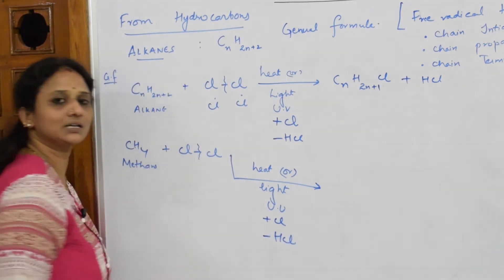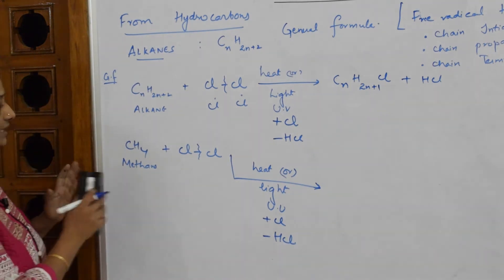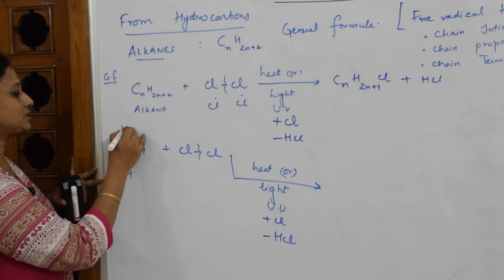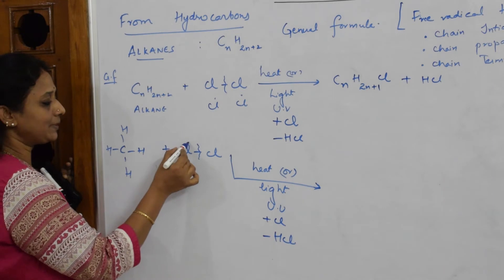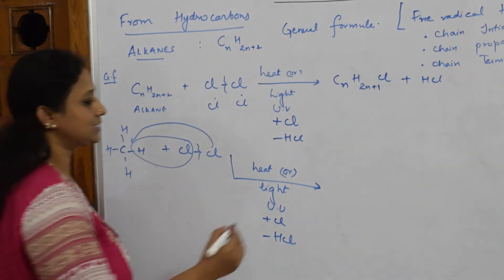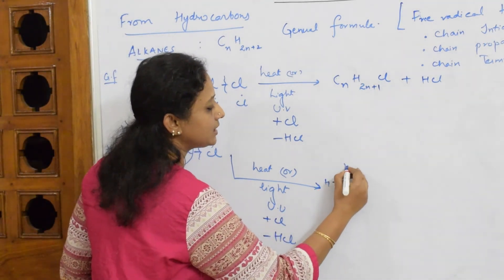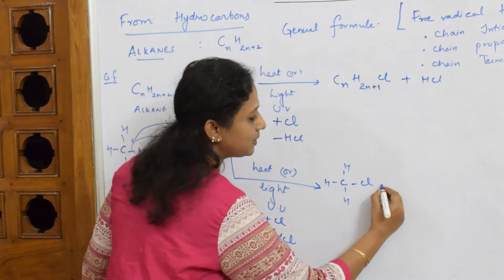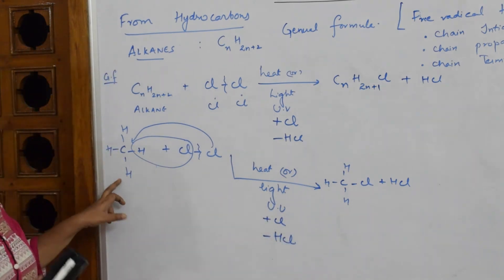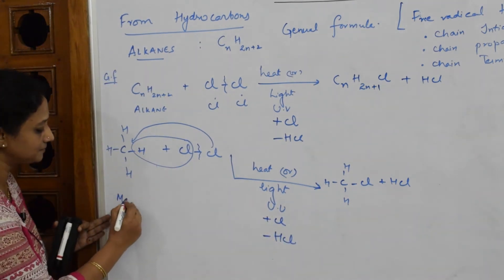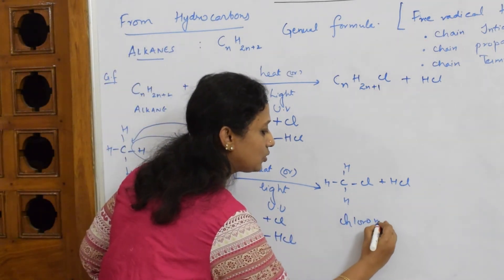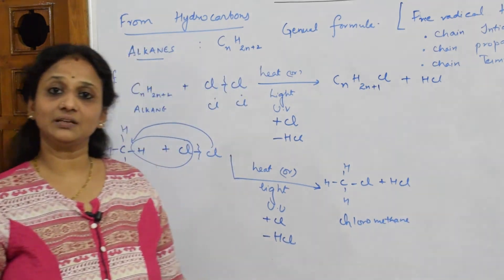Writing out methane structurally as C with four H atoms: HCl comes out and Cl joins in place of one H. The result is CH₃Cl, which is chloromethane. This shows how we prepare a haloalkane from alkane using free radical halogenation.